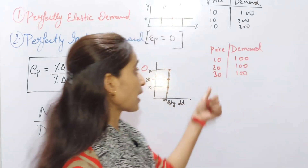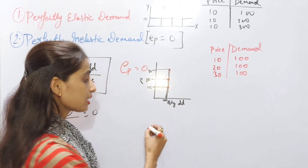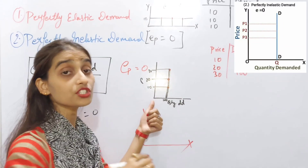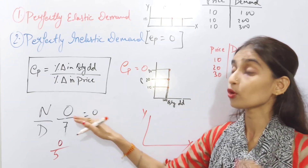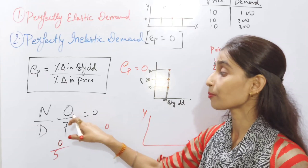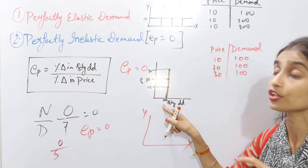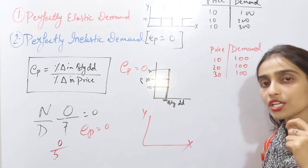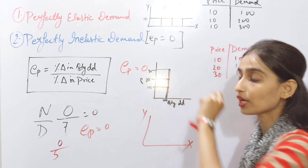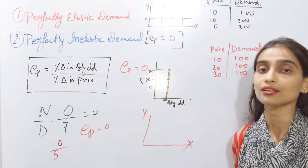In the perfectly inelastic demand example: price is 10 rupees and demand is 100; price rises to 20 and demand is still 100; price rises to 30 and demand is still 100. Quantity demanded is not changing at all — only price is changing. Since the numerator (percentage change in quantity demanded) is zero, EP equals zero. The graph name is a straight line parallel to the y-axis, or a vertical straight line on the y-axis.